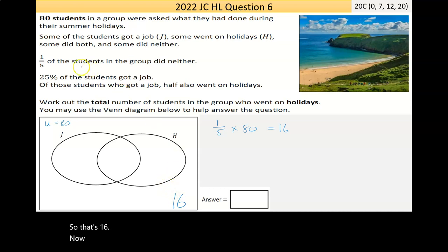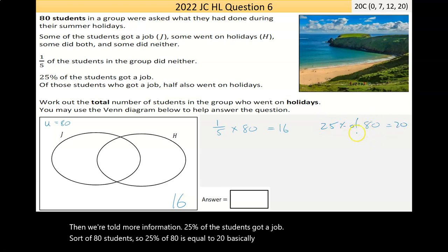Now then we're told more information. 25% of the students got a job. So there's 80 students, so 25% of 80 is equal to 20. Basically a quarter of 80 is 20 students.